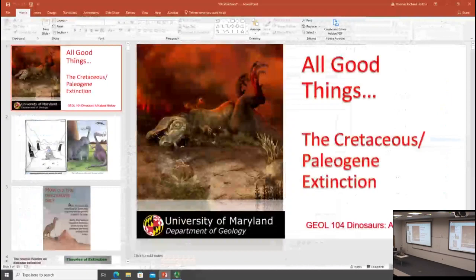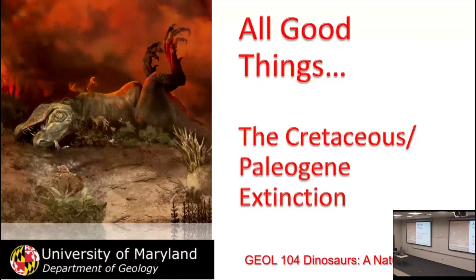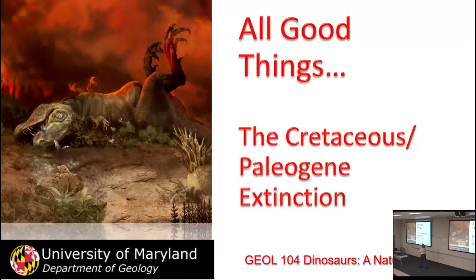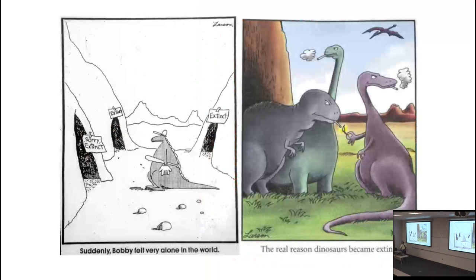We've made our way through the history of dinosaurs, their biology, and some of their contemporaries. Now we have to bring these things to an end. The next several lectures will look at the end of the age of dinosaurs — when it was, what happened, what caused it, and associated phenomena. Then the last couple of lectures will look at dinosaurs in the modern world, popular culture, and issues concerning the science of fossil ownership.